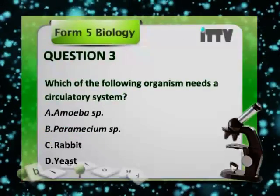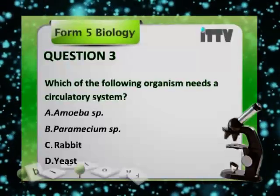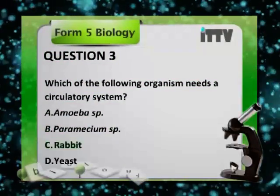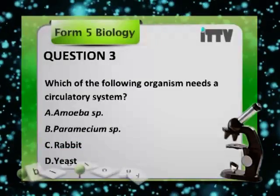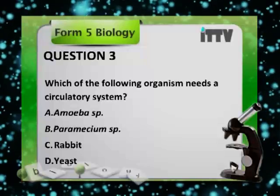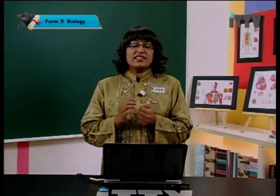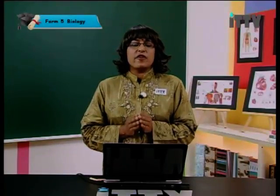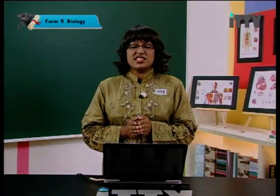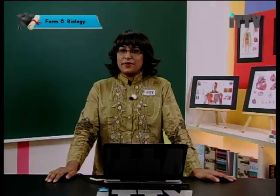Question 3: which of the following organisms needs a circulatory system? The choices are: A — amoeba; B — paramecium; C — rabbit; D — yeast. Amoeba is a unicellular organism, paramecium is also unicellular, and yeast is a very simple organism that engages in simple diffusion. That leaves us with C — the rabbit — which is an example of a mammal with a closed circulatory system much like the one in a human body.